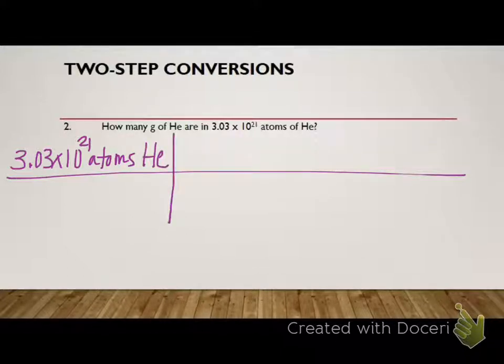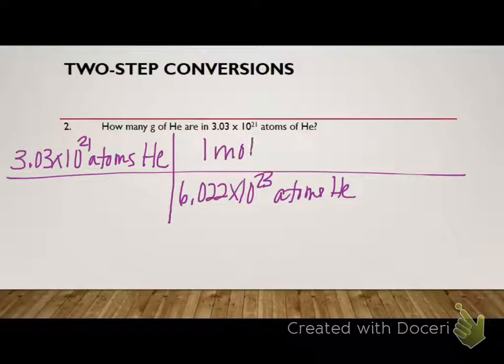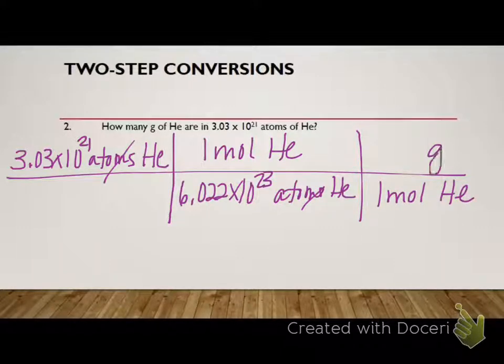We want to get rid of atoms, so we have to use Avogadro's number, 6.022 times 10 to the 23rd atoms of helium to 1 mole of helium. Got rid of atoms. So now we can use the molar mass to get to grams. So we have 1 mole of helium. We look up the molar mass of helium. It's 4. Technically it's 4.00, but we can just write 4 here.